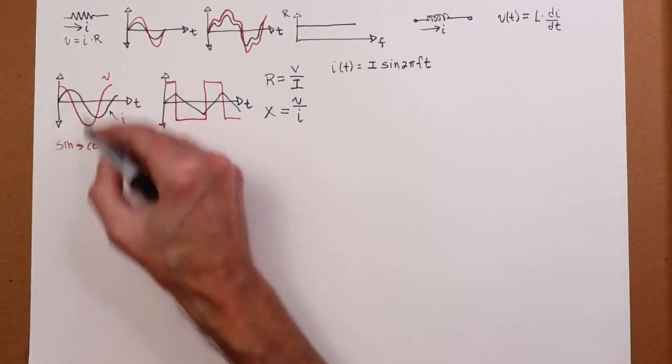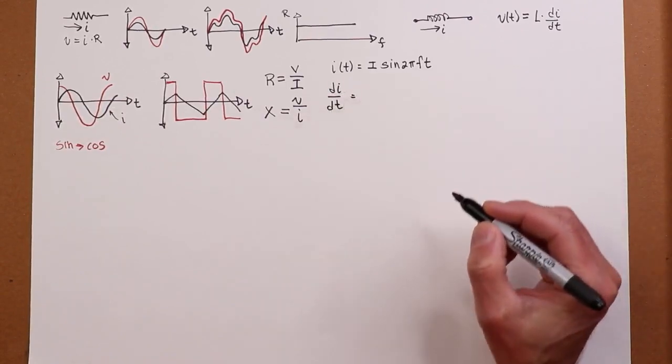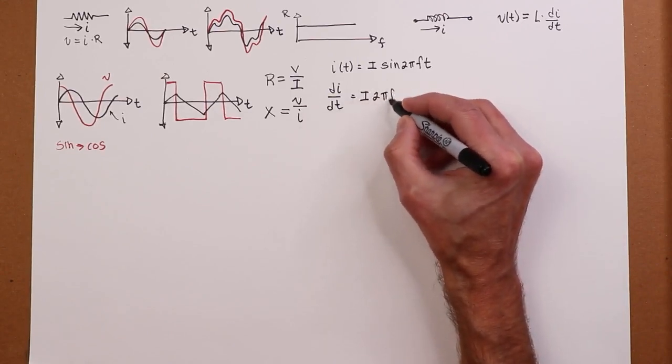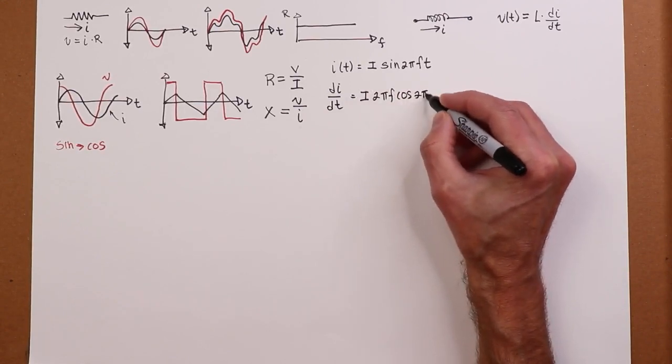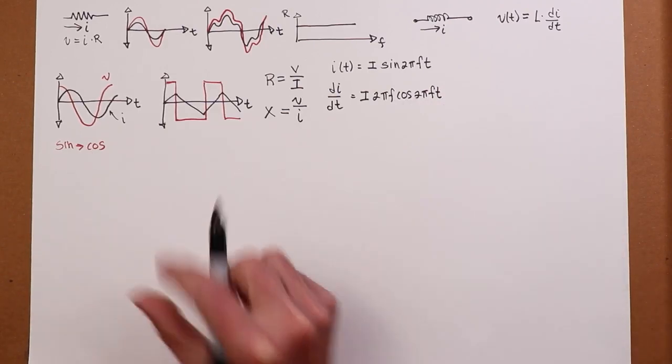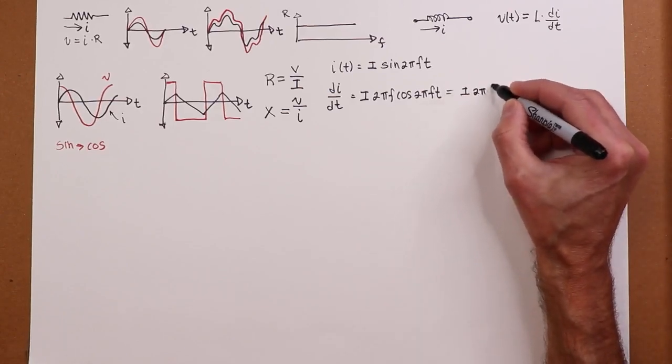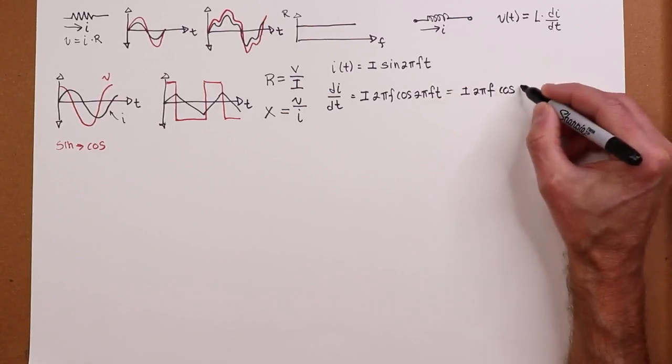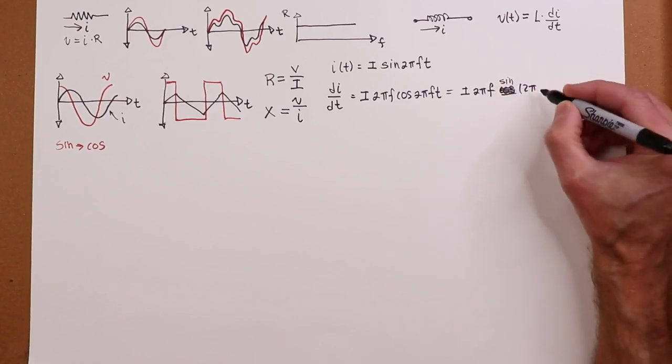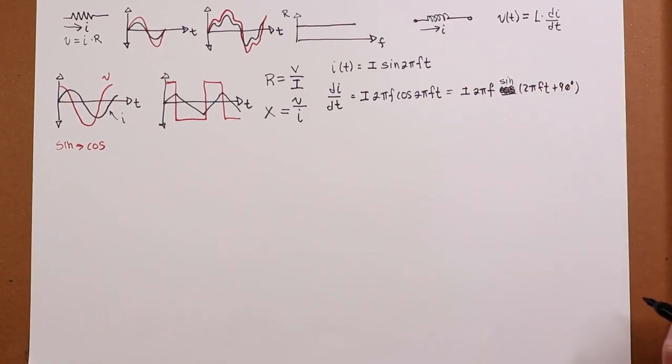Here, I'm going to say that's some peak value I times the sine of 2 pi Ft. So, there's some frequency F, some peak value I. So, I need to find the derivative of this. What is the slope? We already know it's going to be a cosine wave. So, di dt will, in fact, work out to I times 2 pi F times the cosine of 2 pi Ft. Now, we said that cosine is just a sine wave moved 90 degrees over.